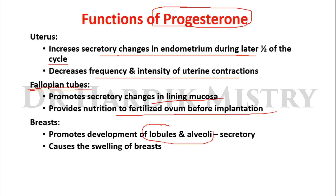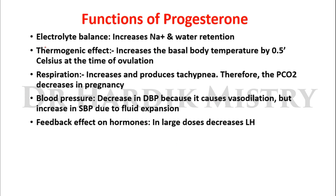Effect of progesterone on the breast: it promotes the development of lobules and alveoli, making the mammary gland secretory in nature. It causes swelling of the breast. For electrolyte balance, there is an increase in sodium and water retention. The thermogenic effect of progesterone increases the basal body temperature by 0.5 degrees Celsius at the time of ovulation.